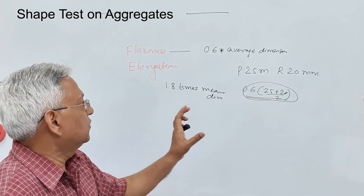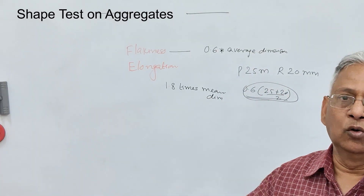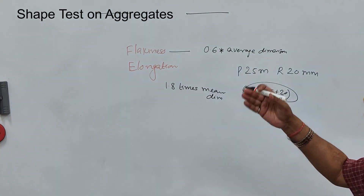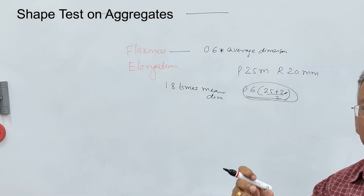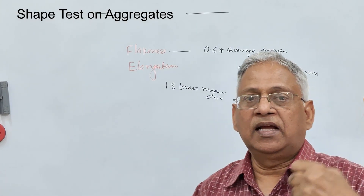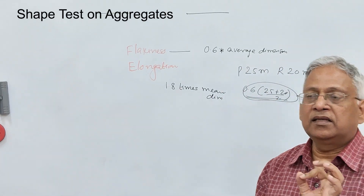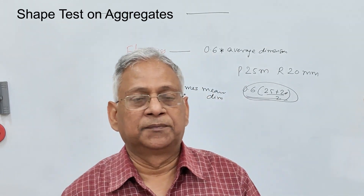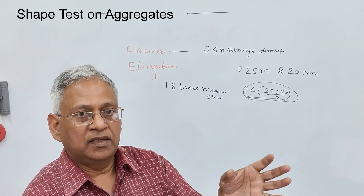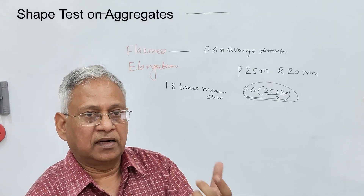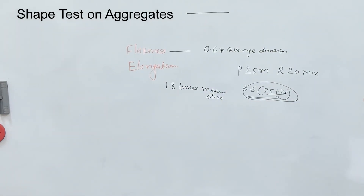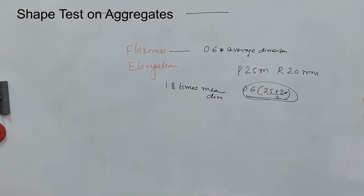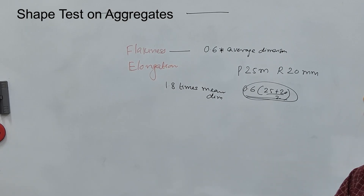Both flaky and elongated particles are not preferred because they are likely to break under load. A flaky particle will break along its thickness; an elongated particle will break due to beam action because of its very long length — when load is applied it acts like a beam and breaks. When the particle breaks it creates dust, the aggregate gradation is disturbed, and in a bituminous layer it creates exposed uncoated surface, giving room for stripping of the aggregate.